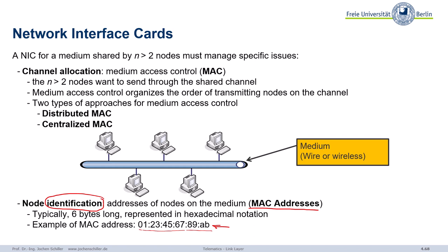Why do we need addresses? If one station sends data on a shared medium — wireless or wired — the frame is distributed over the medium and all stations will receive the frame. Without specifying the receiver, they will all try to interpret it. So I have to say I want to send it to A. Only A will finally pick the frame and understand that someone wanted to send something to it, while B, C, D, and others will discard it. So we need identification.